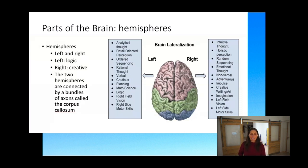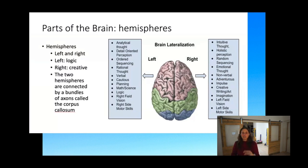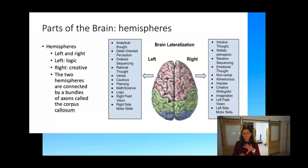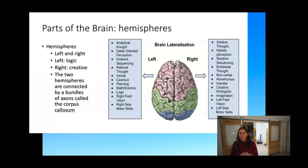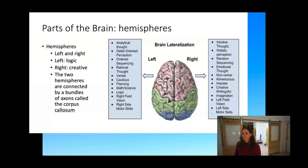On the left brain: analytical thought, detail-oriented perception, ordered sequencing, rational thought, verbal areas, caution, planning, math and science, logic, right field of vision, right side motor skills. On the right brain: intuitive thought, holistic perception, random sequencing, emotional thought, nonverbal action, adventurousness, impulse control, creativity, writing and art, imagination, left field of vision, left side motor skills. So if somebody has brain damage to one side, you'll see those motor deficits on the opposite side, but you might also see some of these other things going on as well.